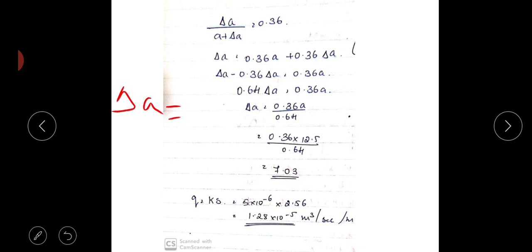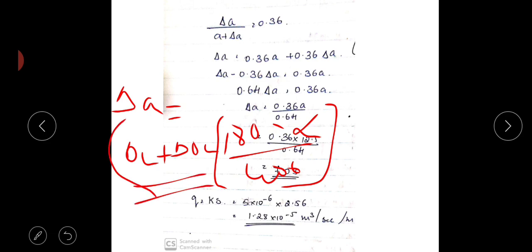Next we'll calculate delta a. To calculate delta a there is a formula: delta a = (a + delta a) × (180 - alpha) / 400. Using this I'll rearrange to get delta a / (a + delta a) = (180 - alpha) / 400. With alpha = 30, you'll get approximately 0.36.